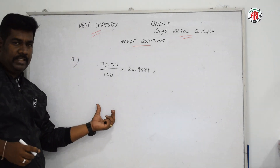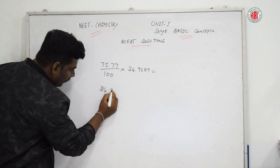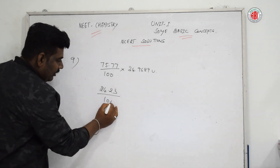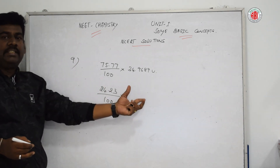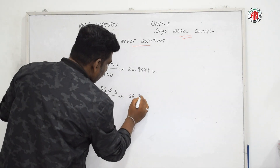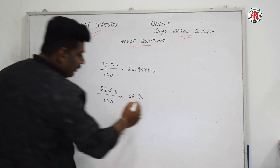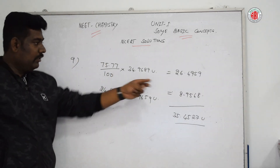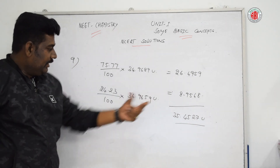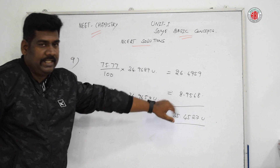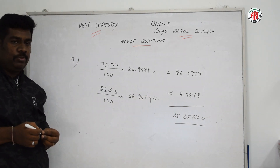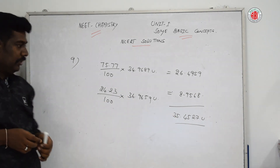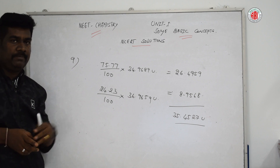Average atomic mass = (75.77 ÷ 100 × 34.9689) + (24.23 ÷ 100 × 36.9659). Simplifying: the first term gives 26.4959 and the second term gives 8.9568. Adding these two we get the average atomic mass of chlorine = 35.4527 u (atomic mass units). By this way we can solve this problem.